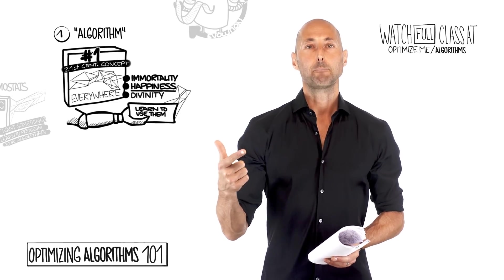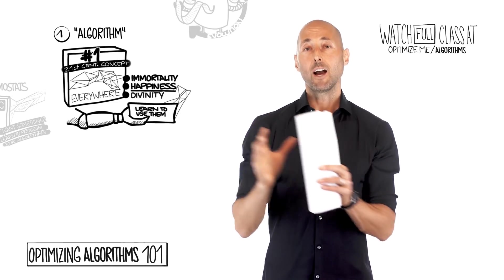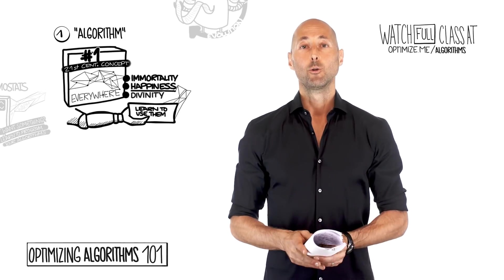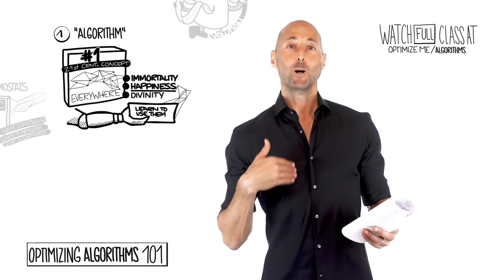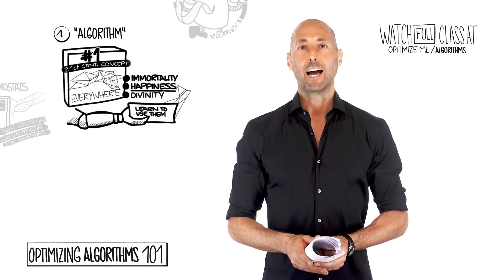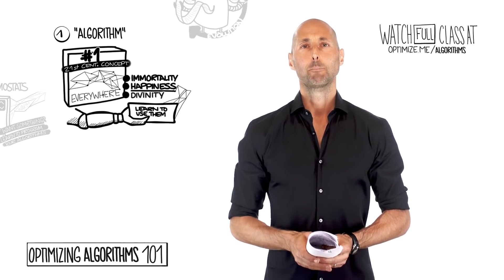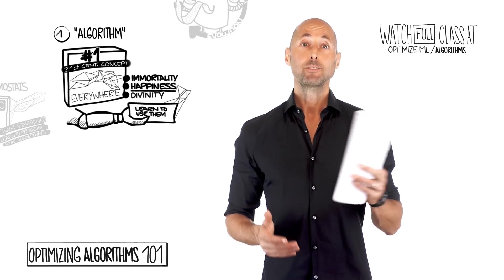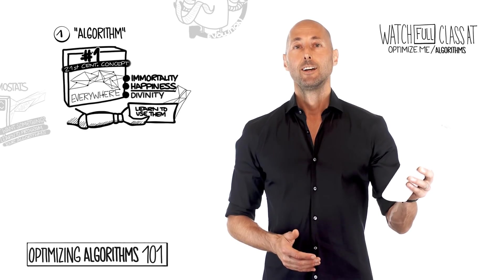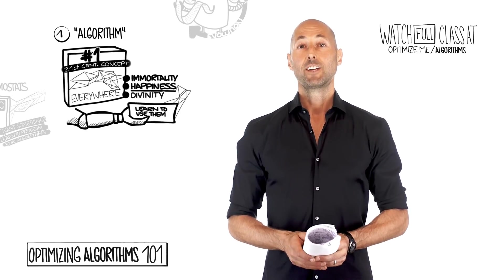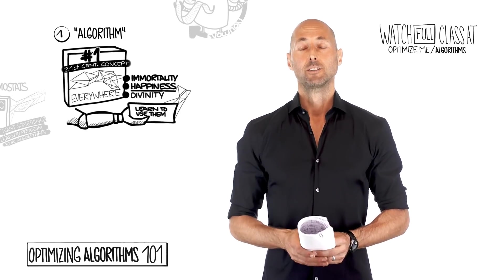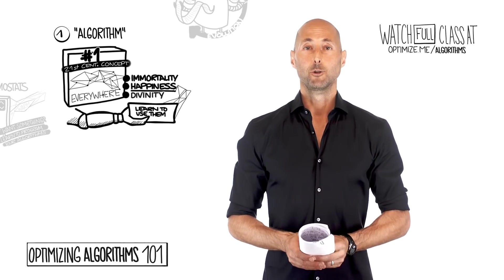Immortality, happiness, and divinity, and how your happiness is connected to, essentially, your ability to write effective algorithms. We'll talk about jobs in the year 2033, the percent likelihood of cashiers having jobs vis-a-vis robots doing those jobs.